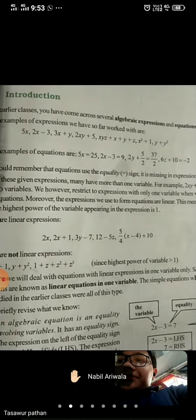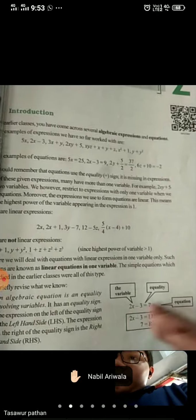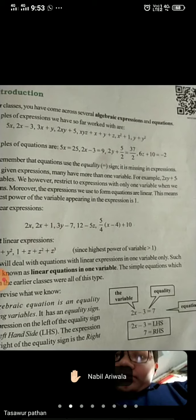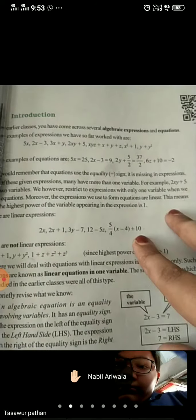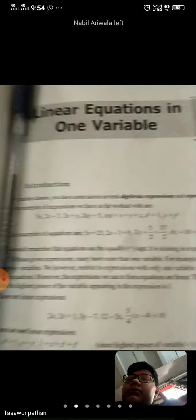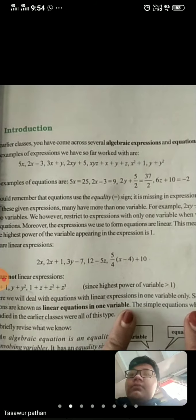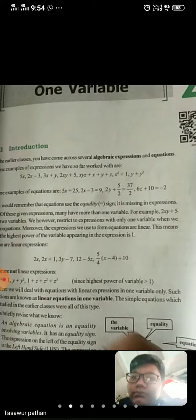Here we will deal with equations with linear expressions in one variable only. Such equations are known as linear equations in one variable. So in this chapter, we will deal with equations where the variable is only one and the expression is linear. This is what we call linear equations in one variable. With this, the introduction is covered. Now we will go on to Example 1.